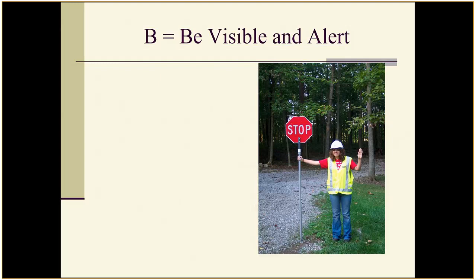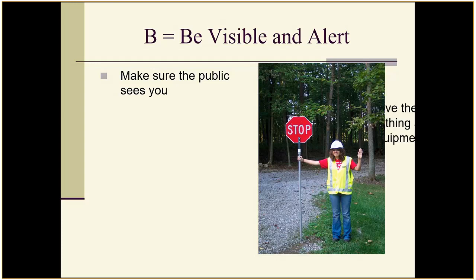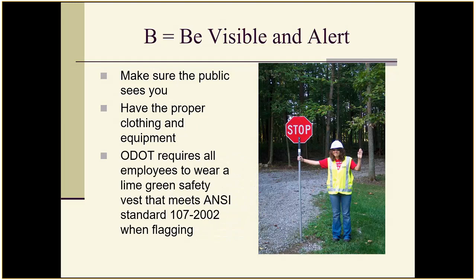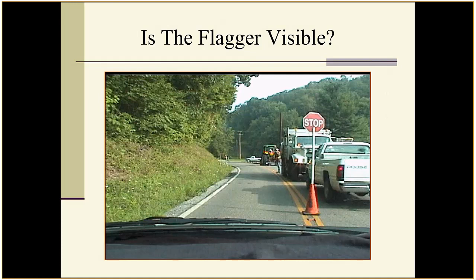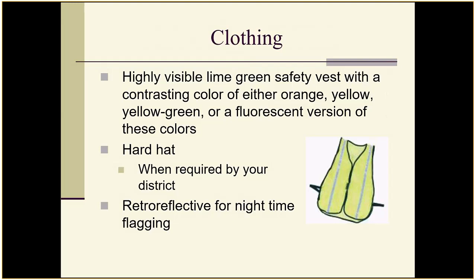B stands for Be Visible and Alert. ODOT requires all employees to wear a fluorescent yellow-green safety vest meeting ANSI standard 107, Class 2 during the day, and Class 3 if flagging at night. One example shows a flagger standing two vehicles away behind a work truck with the stop-slow paddle jammed into a cone right up against the truck — that is definitely not the proper way to flag.